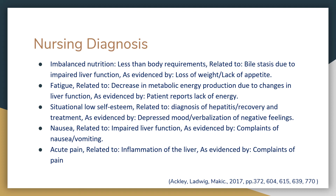Nursing diagnoses for acute hepatitis include: imbalanced nutrition less than body requirements, related to bile stasis due to impaired liver function, as evidenced by weight loss and lack of appetite; fatigue related to decreased metabolic energy production due to changes in liver function, as evidenced by patient reports of lack of energy; situational low self-esteem related to diagnosis, recovery, and treatment, as evidenced by depressed mood and verbalization of negative feelings; nausea related to impaired liver function, as evidenced by complaints of nausea and vomiting; and acute pain related to inflammation of the liver, as evidenced by complaints of pain.